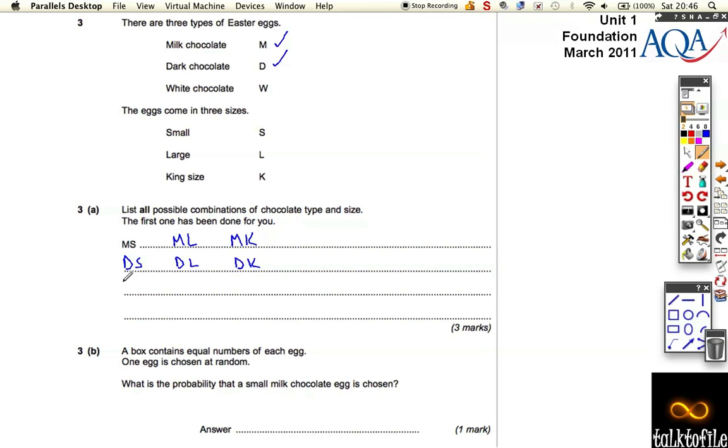And white ones. So do white small, white large, and white king size. And then we've just covered it all.